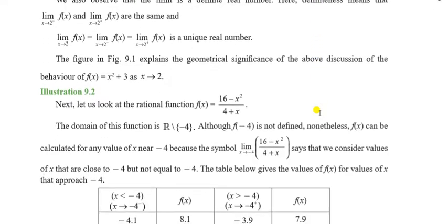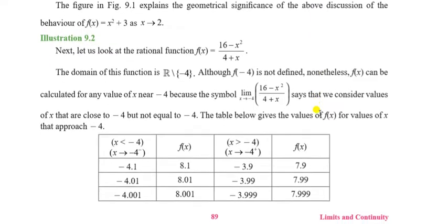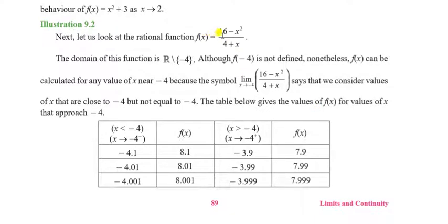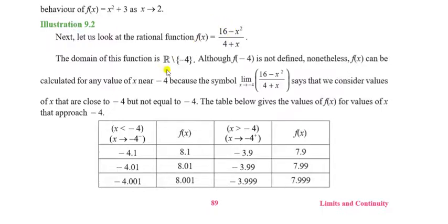Moving to the next example: look at the rational function f(x) = (16 - x²)/(4 + x). What is the domain of this function? The domain is the set of real numbers excluding minus 4, because f(−4) is undefined — the denominator becomes 0, giving infinity. So f(−4) is not defined, and the function is defined only for the set of real numbers excluding −4.